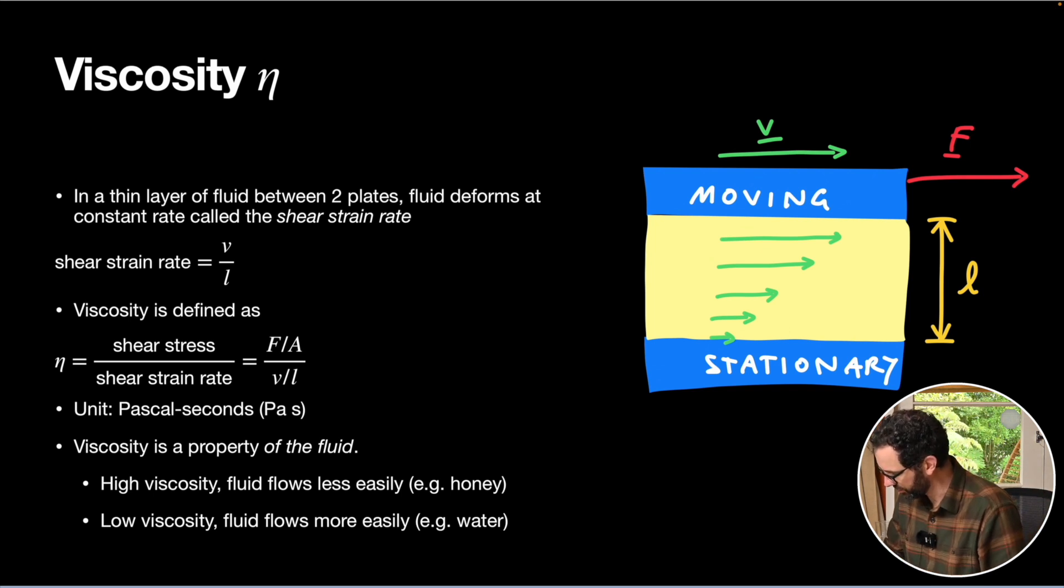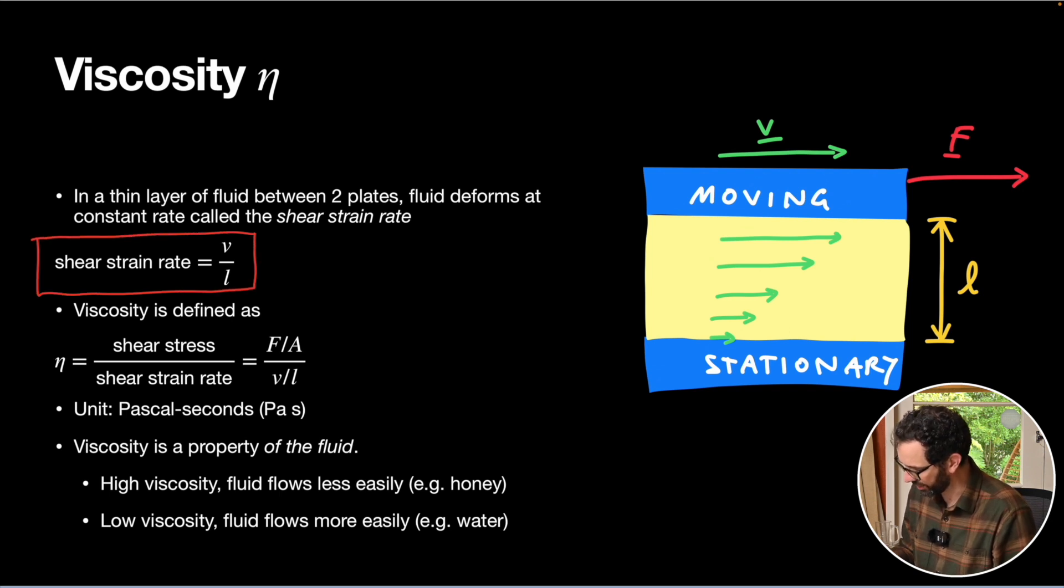Let's highlight our key quantities. One of these is the shear strain rate. So this is the equivalent thing to our strain, but when we've got a fluid we talk about the strain rate instead. We define that to be that velocity divided by the thickness of the fluid layer.